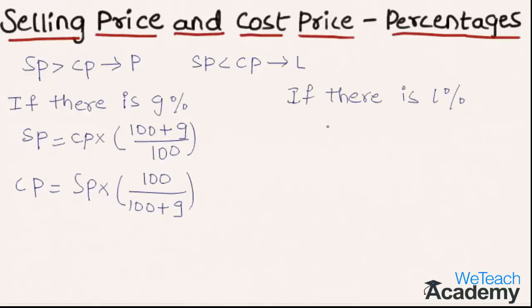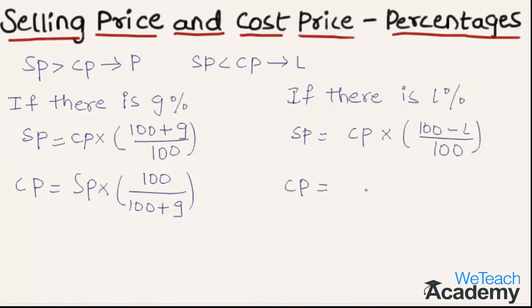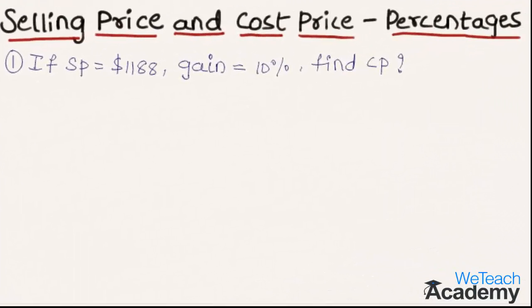If there is a loss percentage, to find the selling price the formula is: Selling Price = Cost Price × (100 − Loss%) ÷ 100. And to find the cost price the formula is: Cost Price = Selling Price × 100 ÷ (100 − Loss%). Let us solve a few examples to understand this concept.